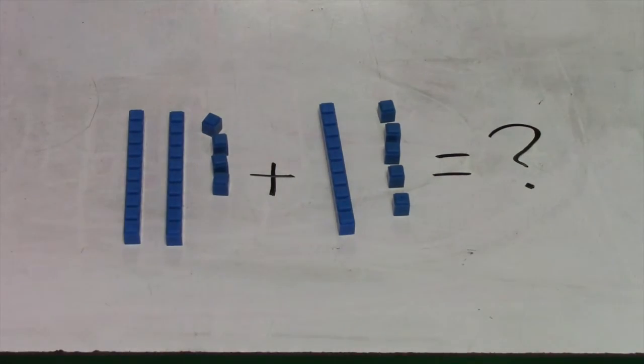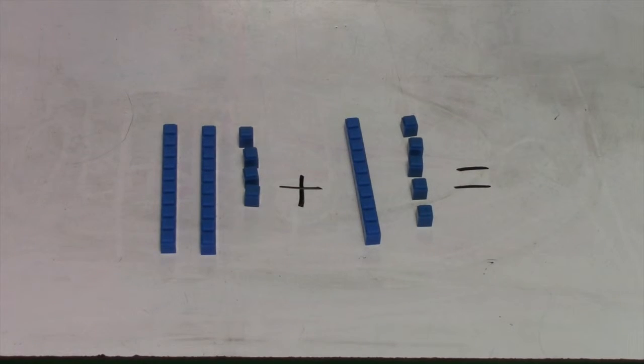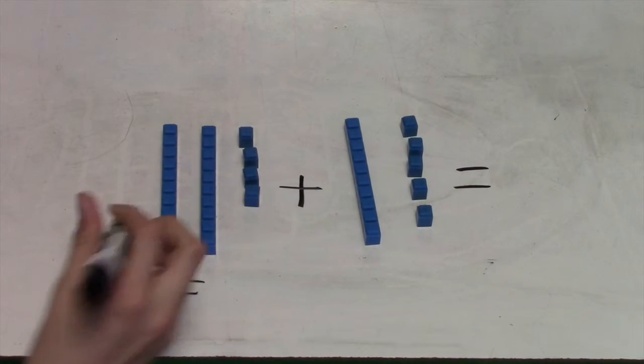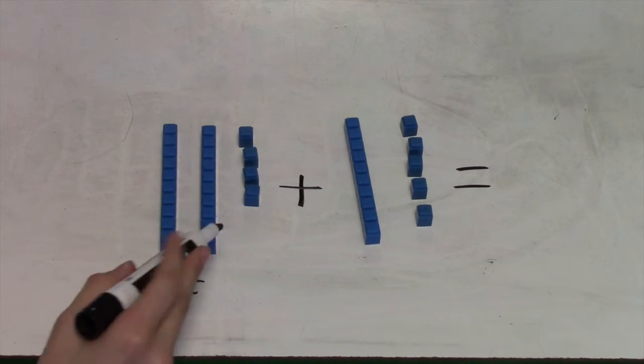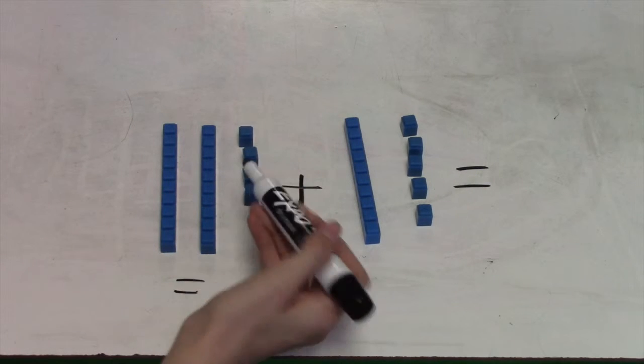Now add these two together. Now you have to count them up. So, 10, 20, 21, 22, 23, 24.